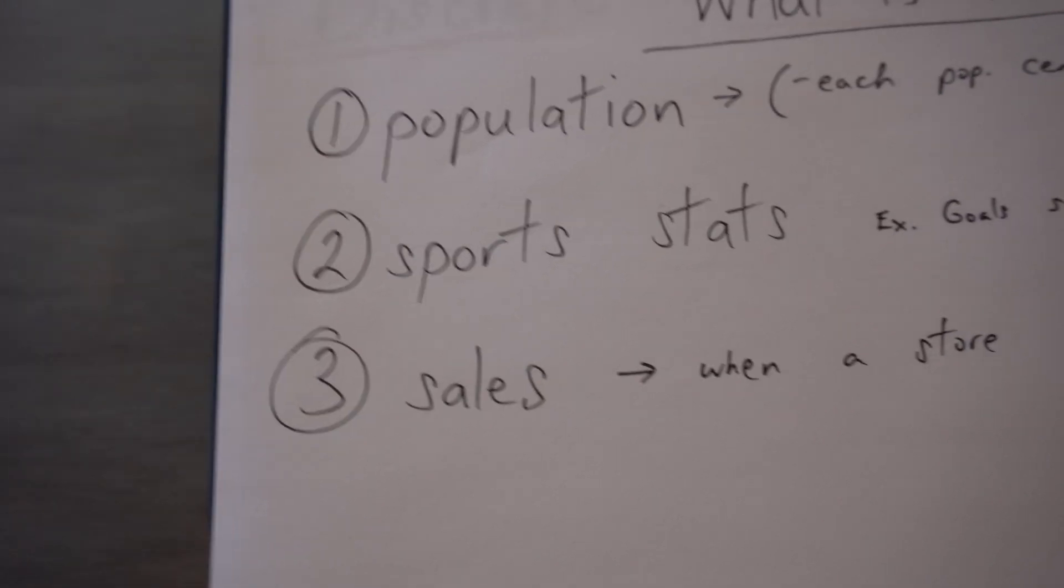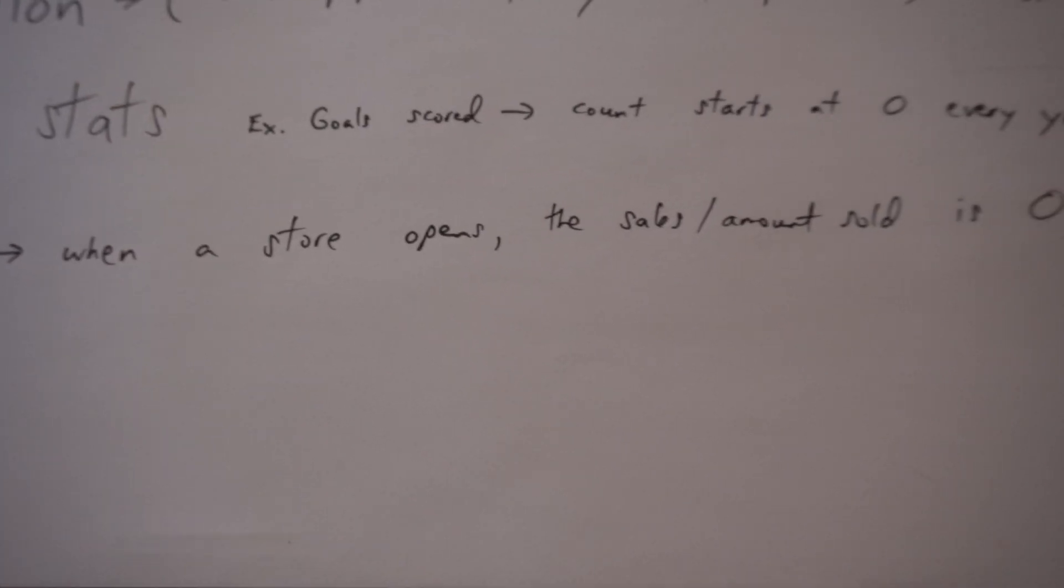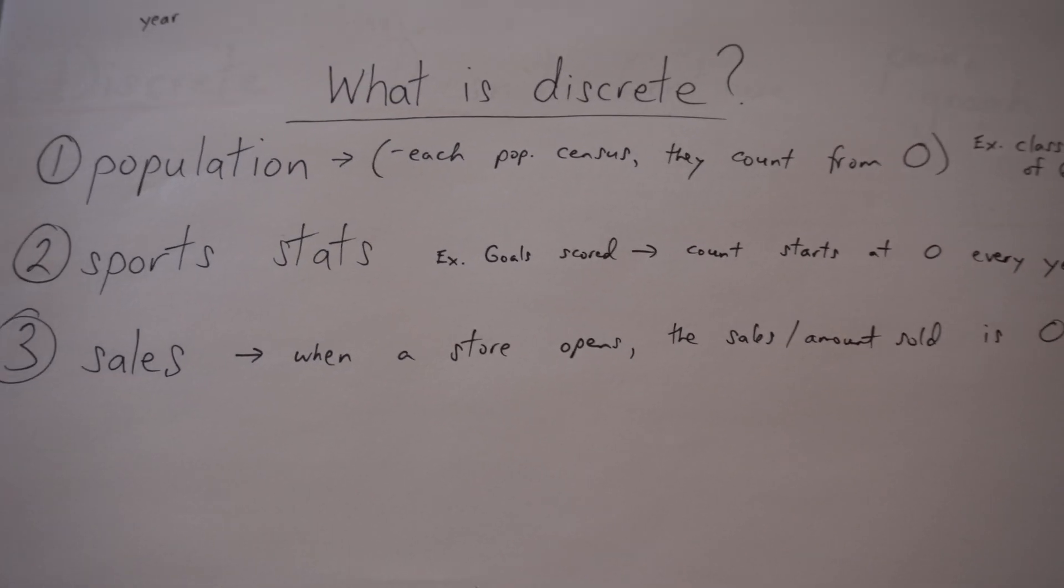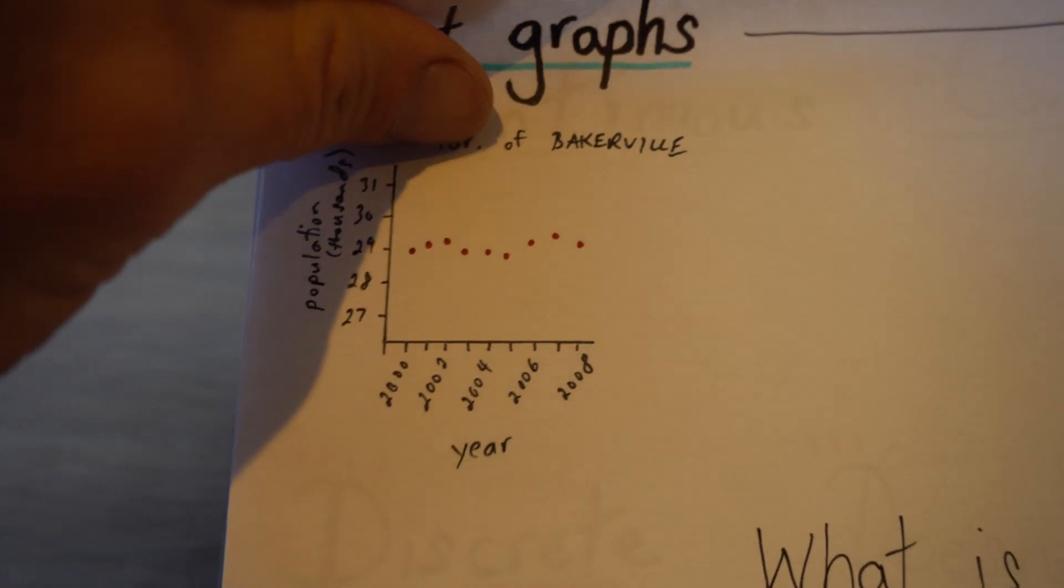Lastly, sales. If you had a store, when you open up those doors each day, the sales amount that you have when you open up is zero. So again, discrete means starting from zero because one data point doesn't influence the next data point.